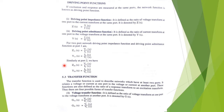Similarly, at output port number two, we can define the driving point output admittance function. For example, Z22(s) is defined as the ratio of the voltage transform at the output port to the current transform at the output port. For transfer functions, we have the voltage transfer function; for example, G21(s) is given as V1(s) divided by V2(s), defined as the ratio of voltage transform at the input port to the voltage transform at the output port.